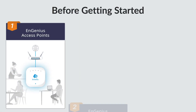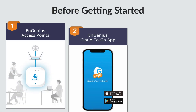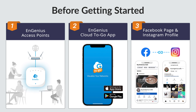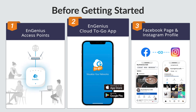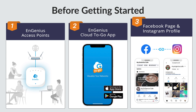As a business owner, make sure you have three preliminary things ready before setting up Facebook Wi-Fi for your customers. First of all, have your Ingenious Cloud access point registered and connected to the internet via a gateway or router. Secondly, download the Ingenious Cloud2Go app and log in to your managed network. Third, log in to your Facebook page as an administrator and connect to your business Instagram account if you want your customers to check in with their Instagram accounts.